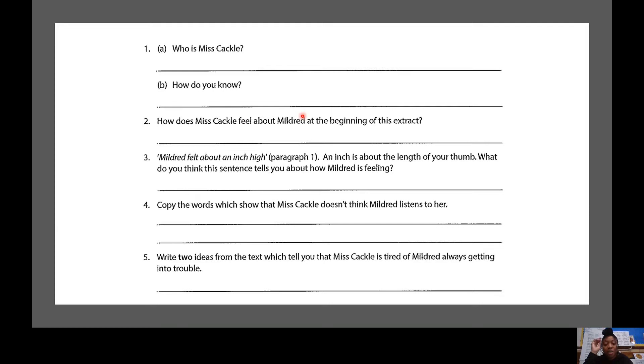Question number three, Mildred felt about an inch high. You can find that in paragraph one. An inch is about the length of your thumb. What do you think this sentence tells us about how Mildred is feeling? Question number four, copy the words which show that Miss Cackle doesn't think Mildred listens to her. Question number five, write two ideas from the text which tell you that Miss Cackle is tired of Mildred always getting into trouble.